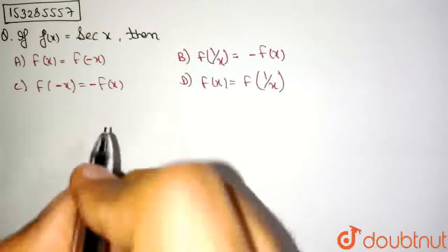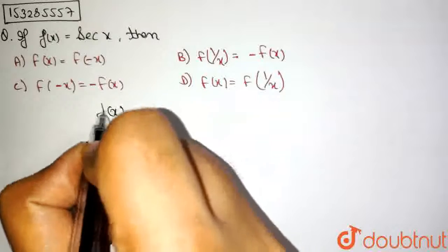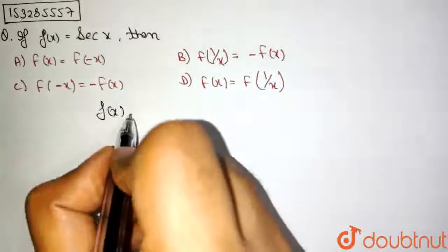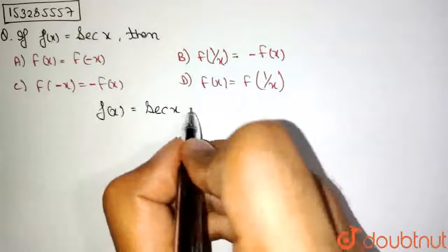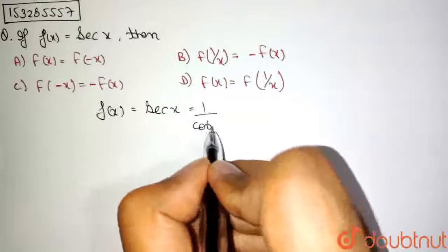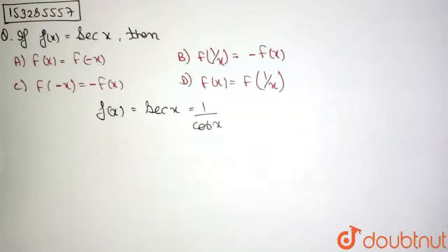So, we could write f of x, which is sec of x, as 1 upon cos x. It is the same function.